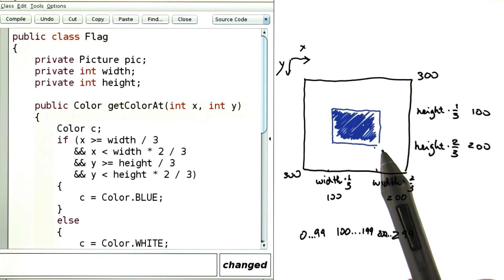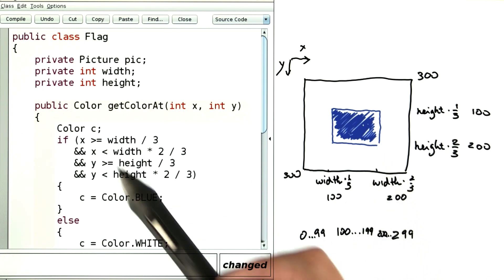So to be within the second of these, you want to be greater or equal 100 and less than 200. That's why you have a greater equal here and a less than there.